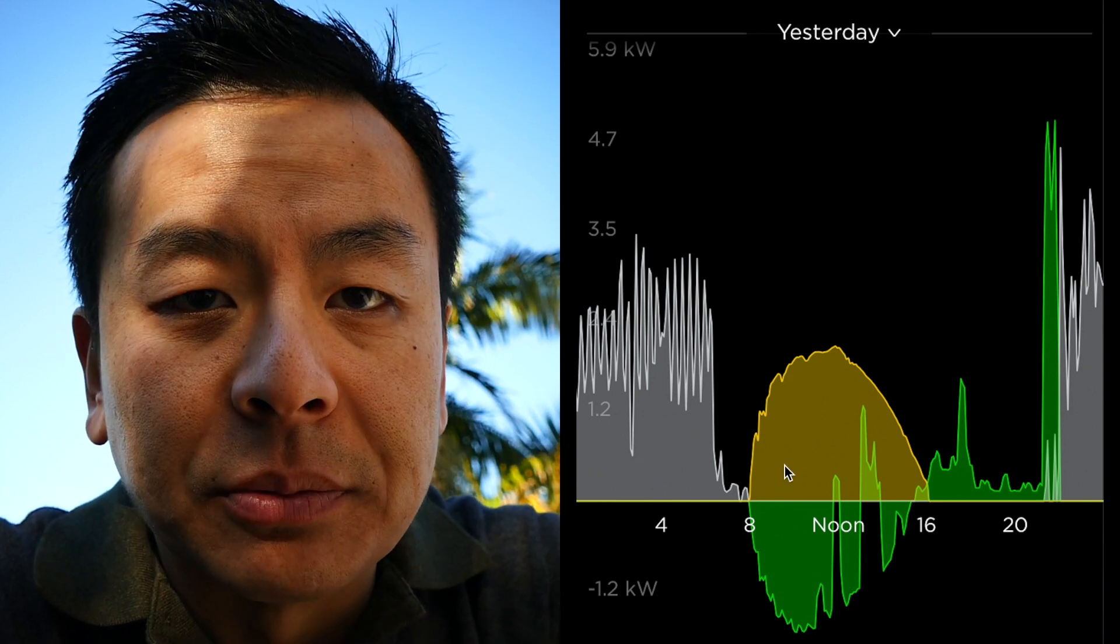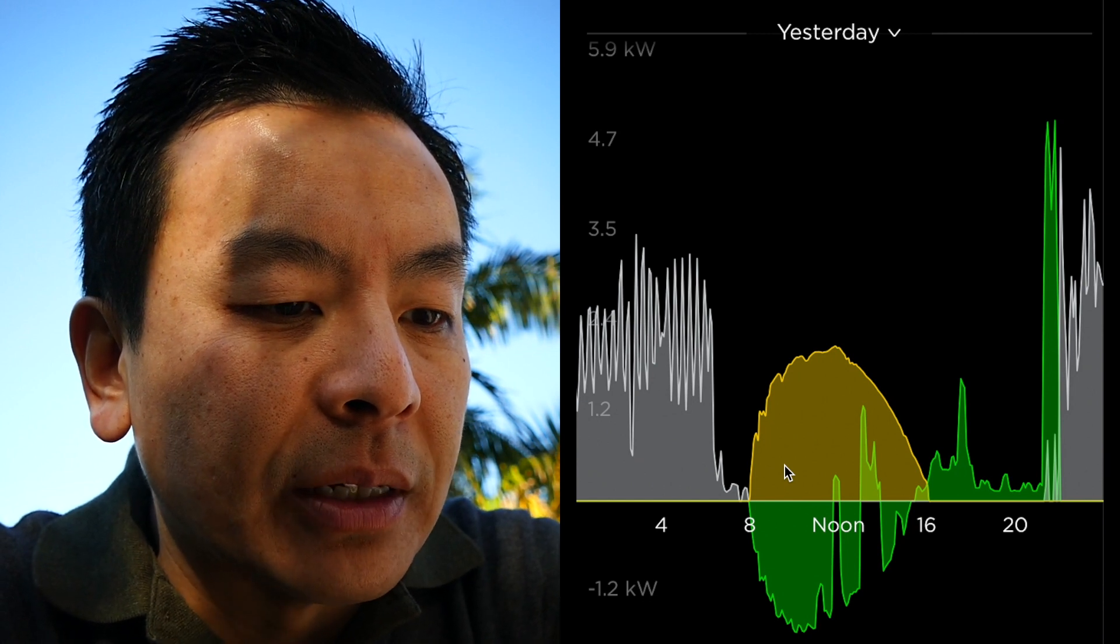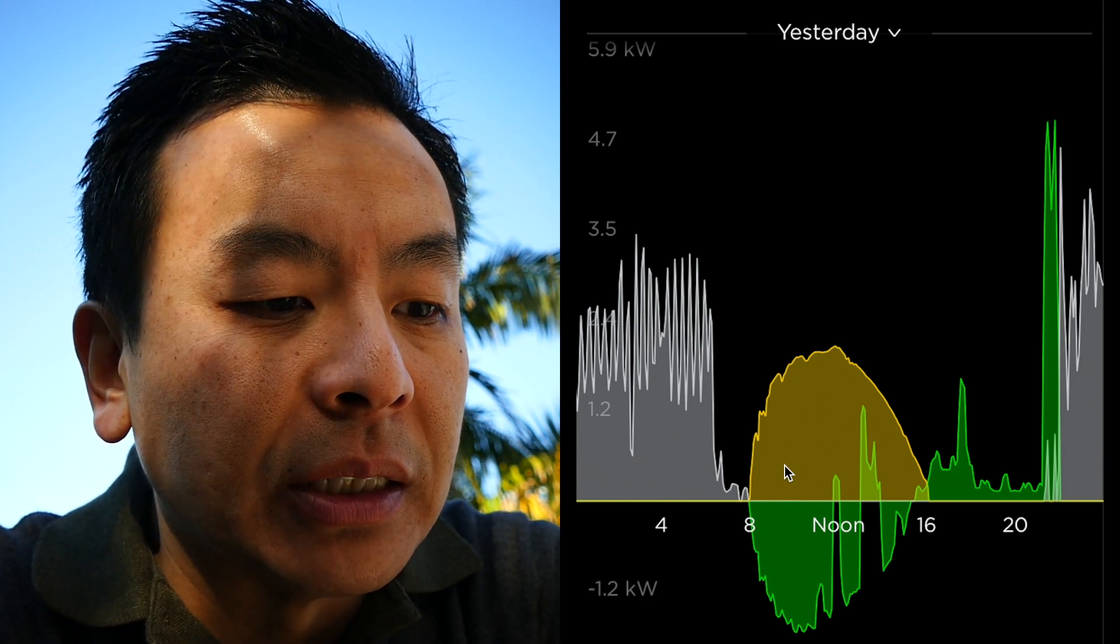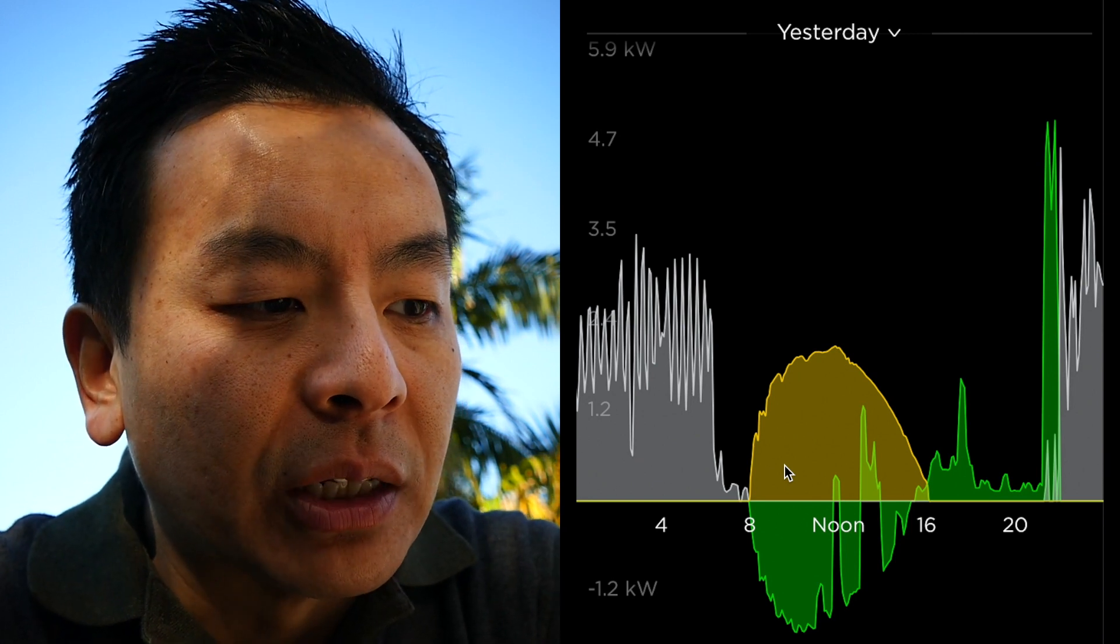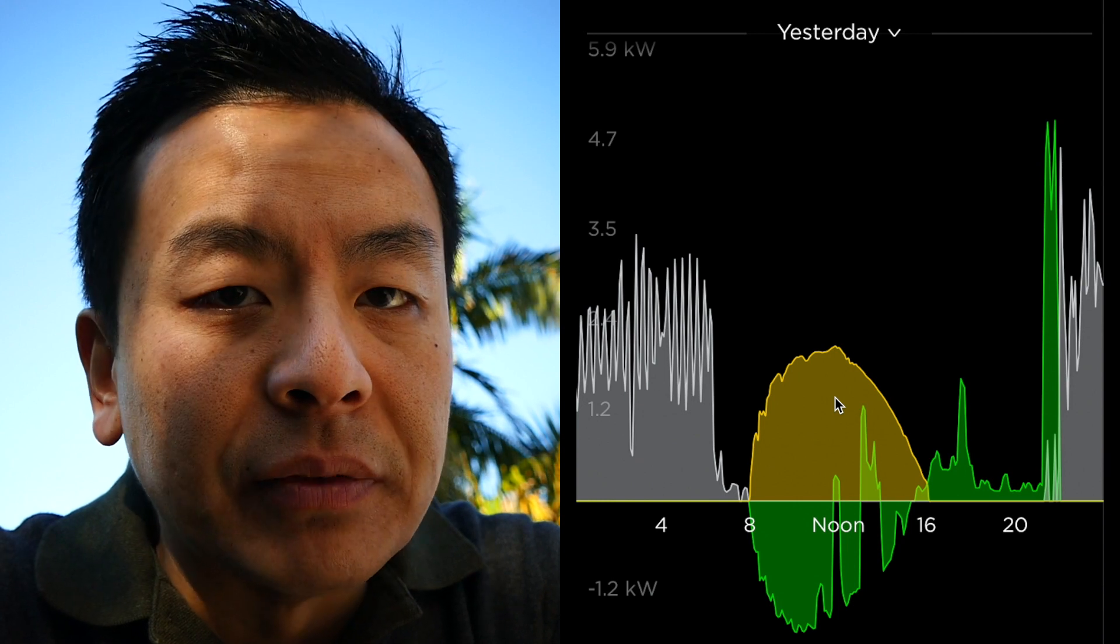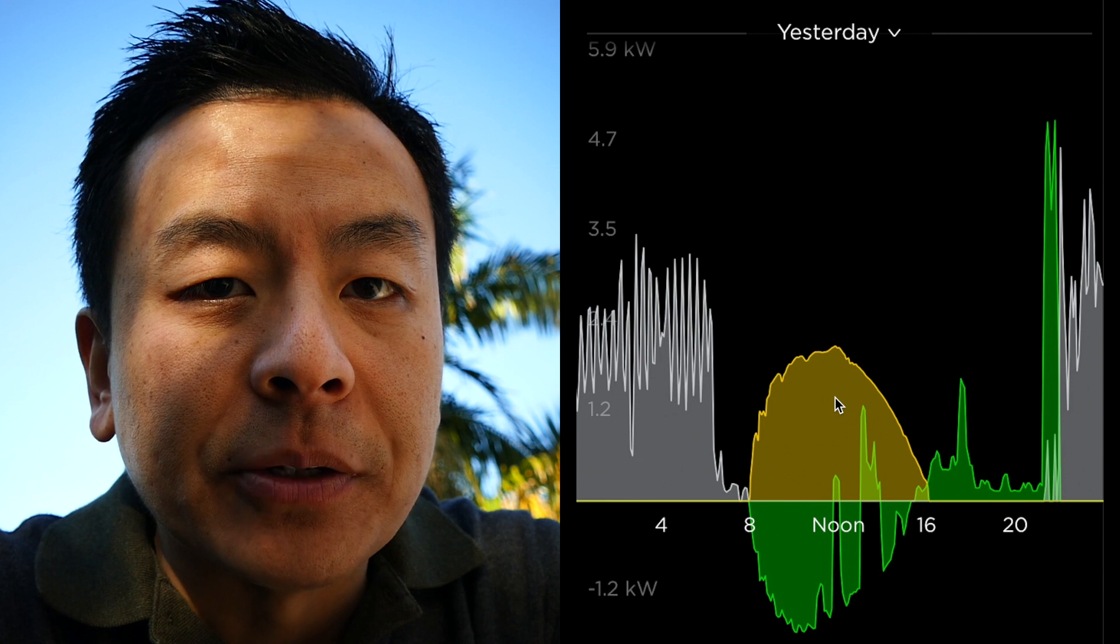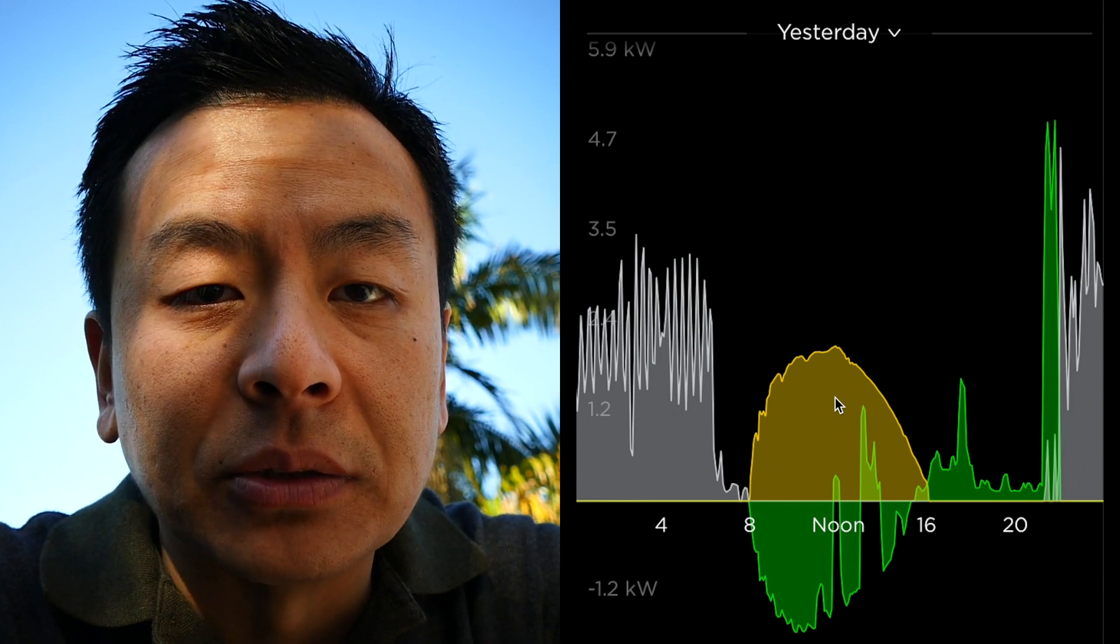This is about as good as it gets here in Sydney on a winter's day, especially around this time of year when it's the winter solstice. So I've got a three kilowatt system and it's producing about 11 to 12 kilowatt hours of electricity or energy from the sun, and that's about as good as it gets here in winter.